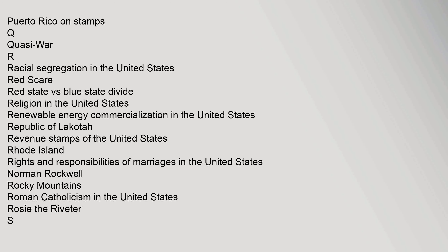President of the United States, Prohibition in the United States, Puerto Rico, Puerto Rico on Stamps. Q: Quasi War. R: Racial Segregation in the United States, Red Scare, Red State versus Blue State Divide, Religion in the United States, Renewable Energy Commercialization in the United States, Republic of Lakota, Revenue Stamps of the United States.